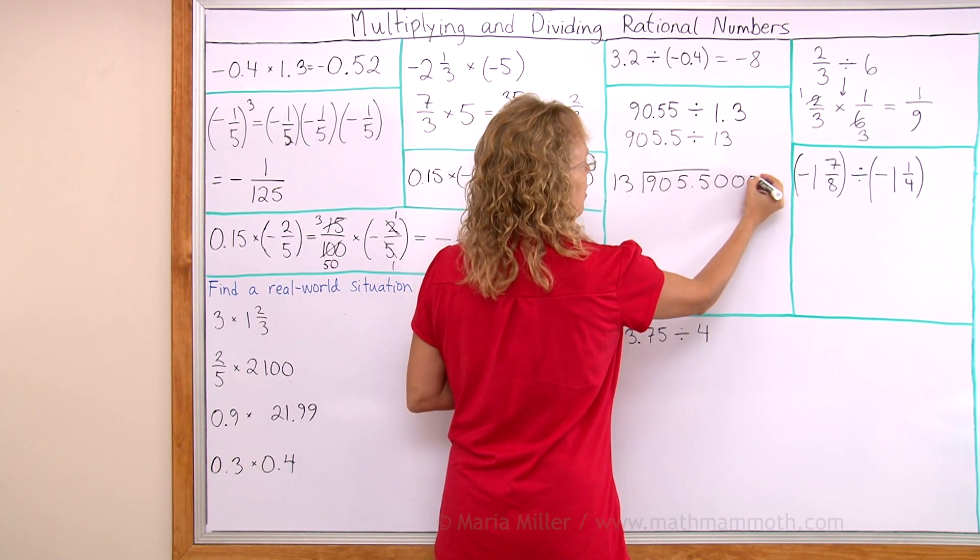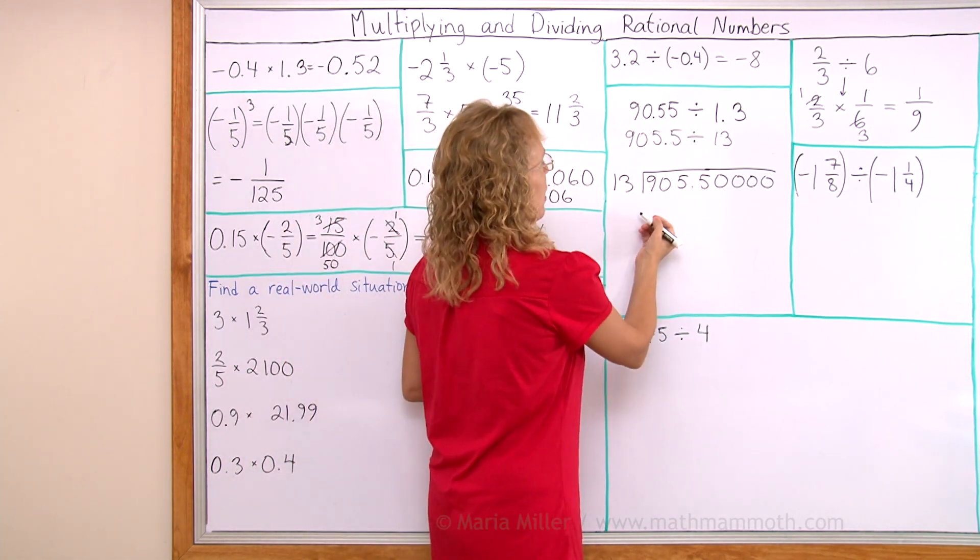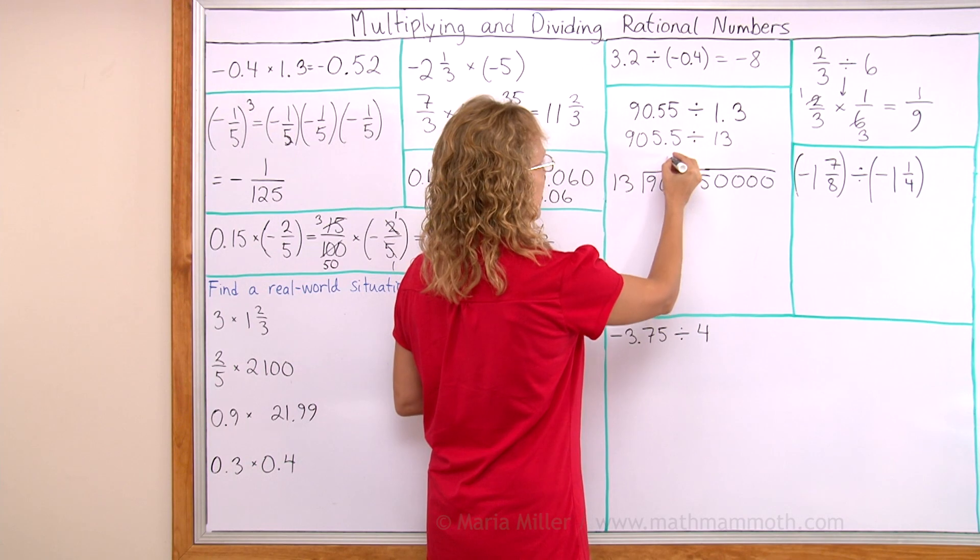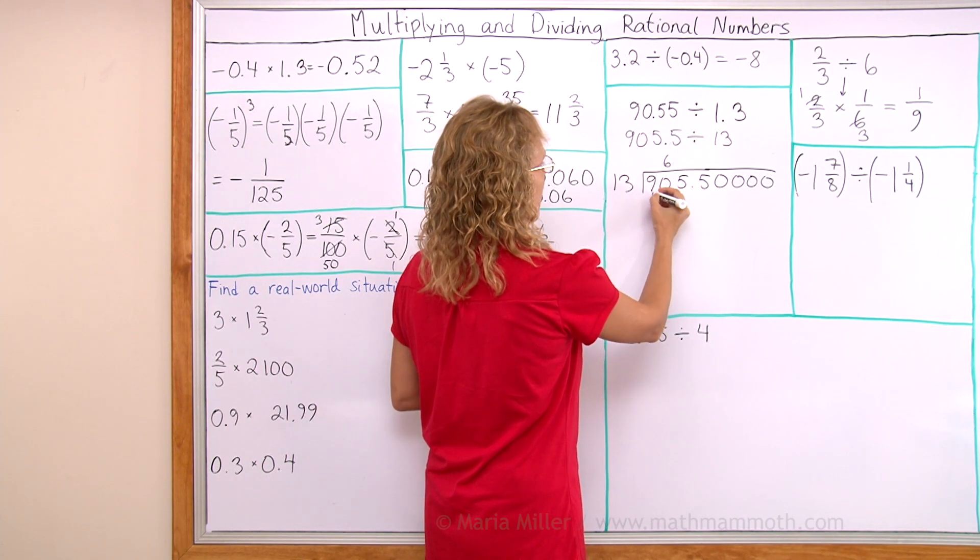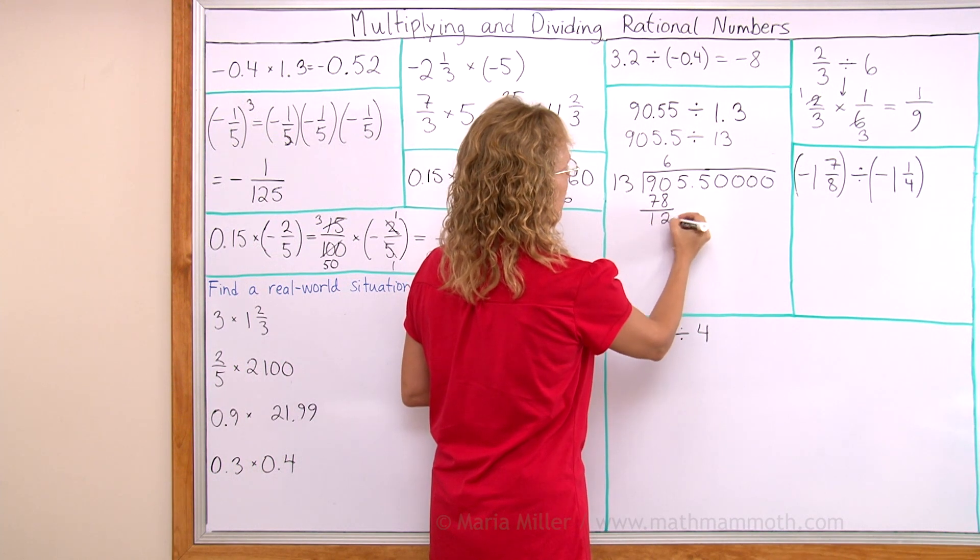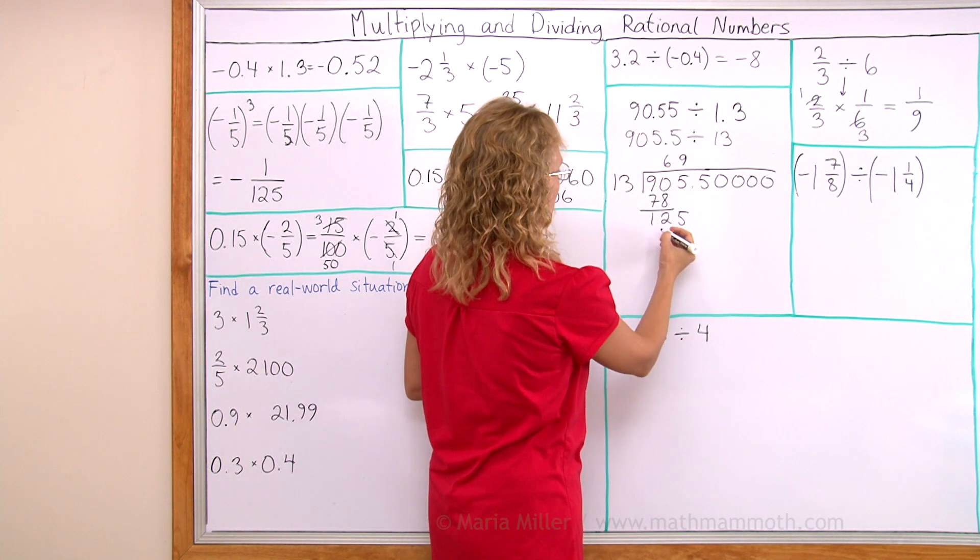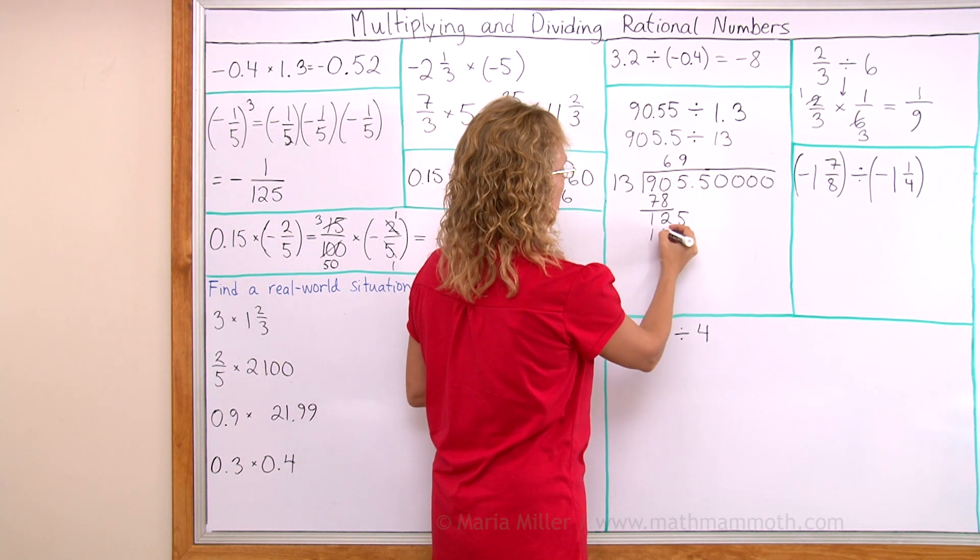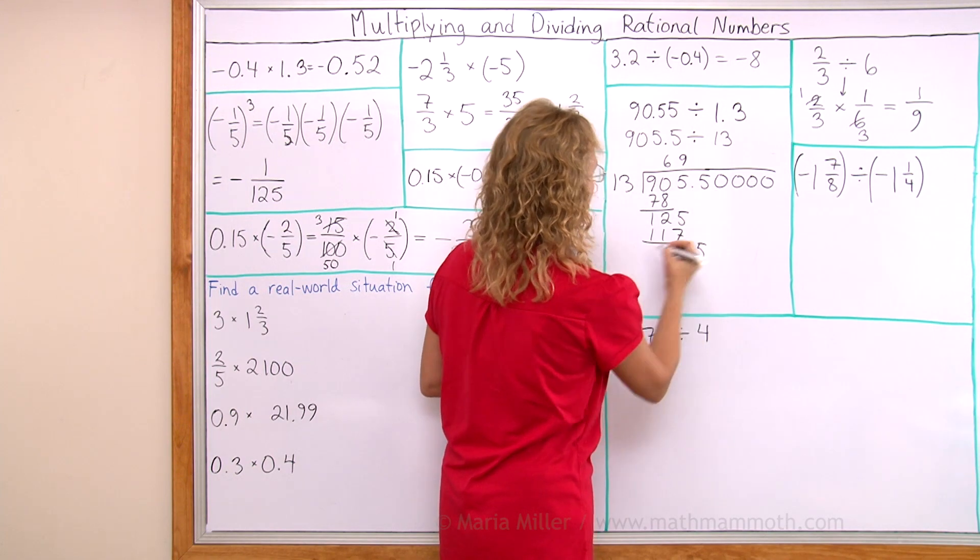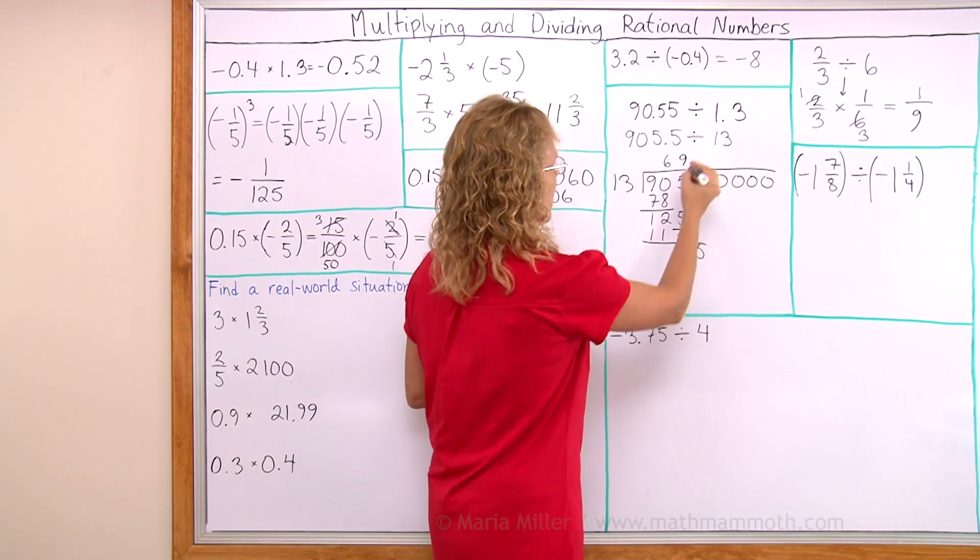And then I use long division. I'm going to add some decimal zeros here. I anticipate it not being an even division. So 13 goes into 90 here six times. So we get 78. Then over here 125. And now here it goes nine times. That's 90, 1 and 17.